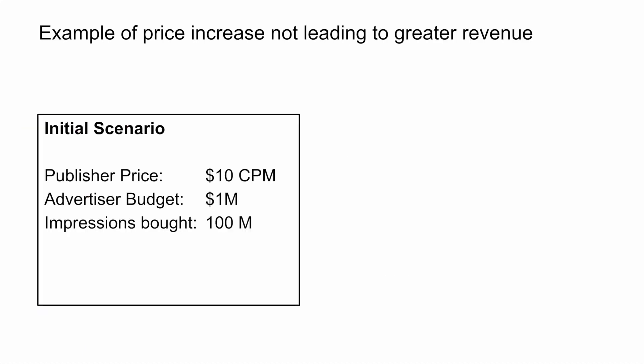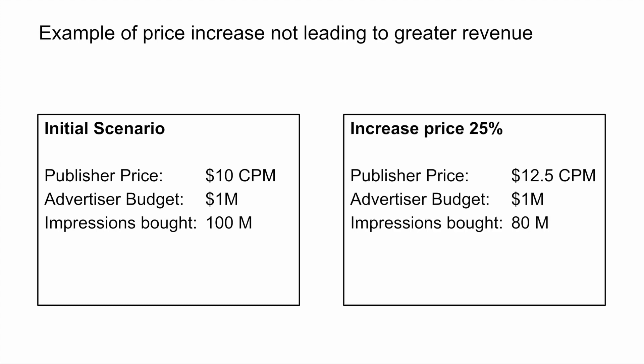Let's consider an example where a price increase may not lead to greater revenue. If the advertiser has a budget of a million dollars but the publisher is charging a $10 CPM, this translates into 100 million impressions that would be bought. What happens if the publisher raises the price from $10 CPM to $12.50 CPM — a price increase of 25 percent? If the advertiser does not change their budget, they're still spending a million dollars, but the impressions bought will decrease from 100 million down to 80 million. So the challenge for publishers is that they may be making more per unit, but unless they're also selling more units, they may not be making more money overall.